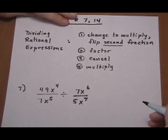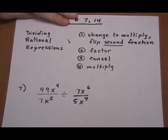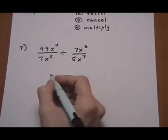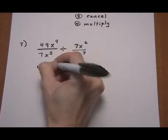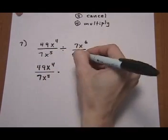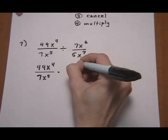Let's go ahead with number seven. First thing we do is change it to a multiply problem: 49x⁴ over 7x⁵, times—flip over this one—5x⁷ over 7x⁶.